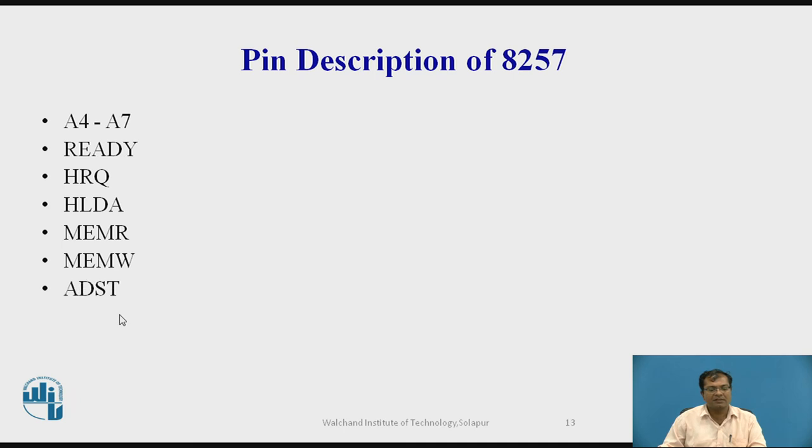ADSTB, which converts higher byte memory address to the DMA control latch. AEN, which is going to disable address and data bus. Then MARK, it indicates 128 bytes are covered or transferred.